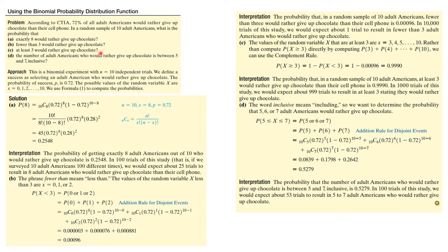Part C asks: at least 3 would rather give up chocolate, meaning P(X ≥ 3). You could compute P(3) + P(4) + ... + P(10) directly, but that's a lot of work. It's easier to use the complement rule: P(X ≥ 3) = 1 − P(X < 3), which is 1 minus what we just calculated, giving us our answer.